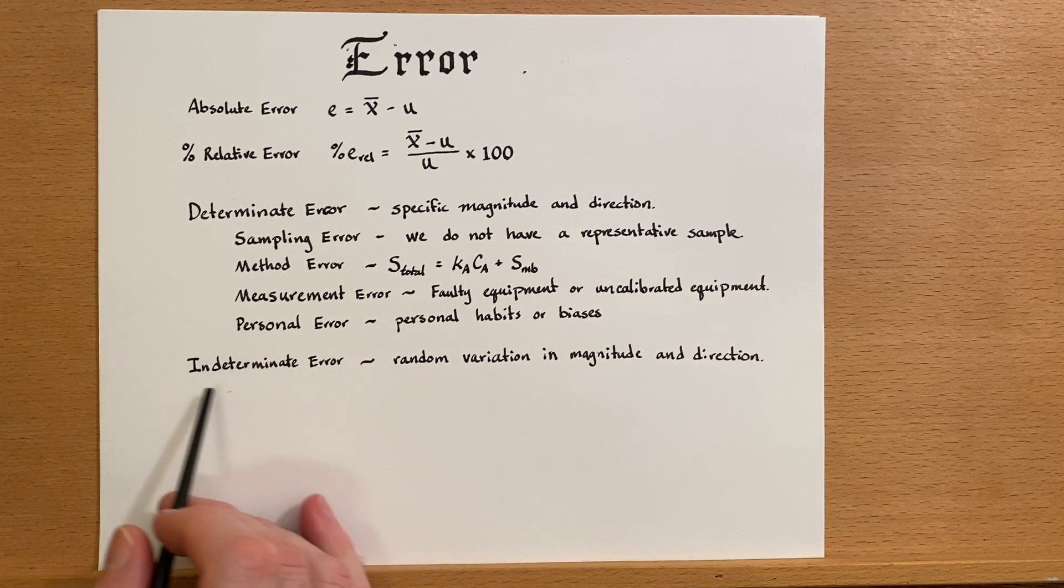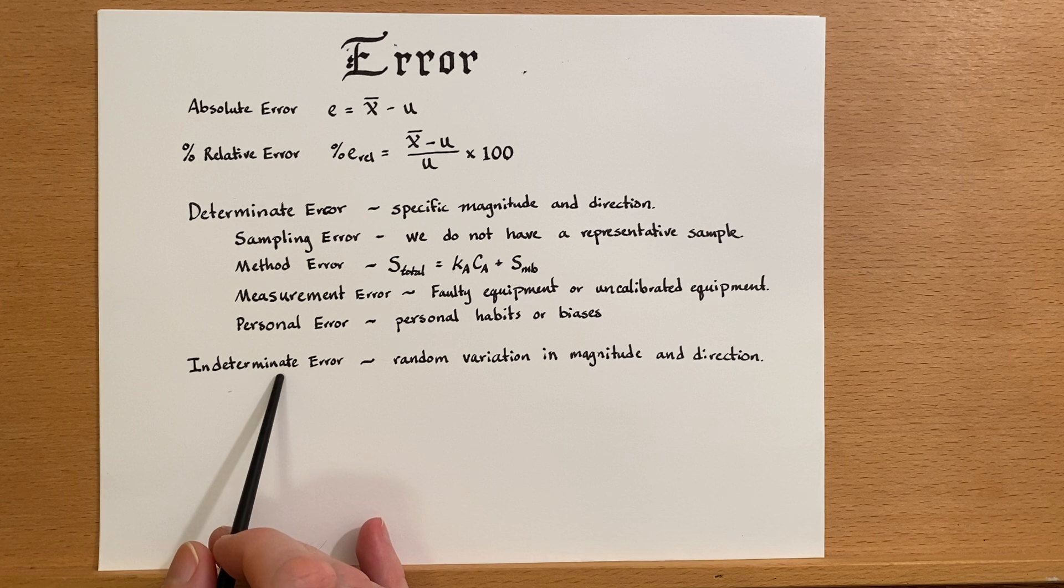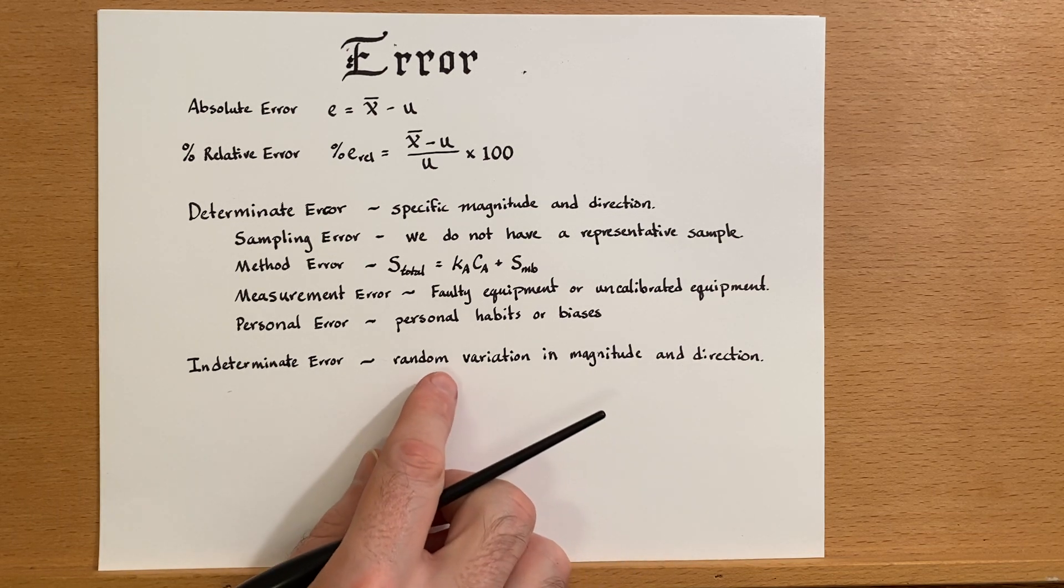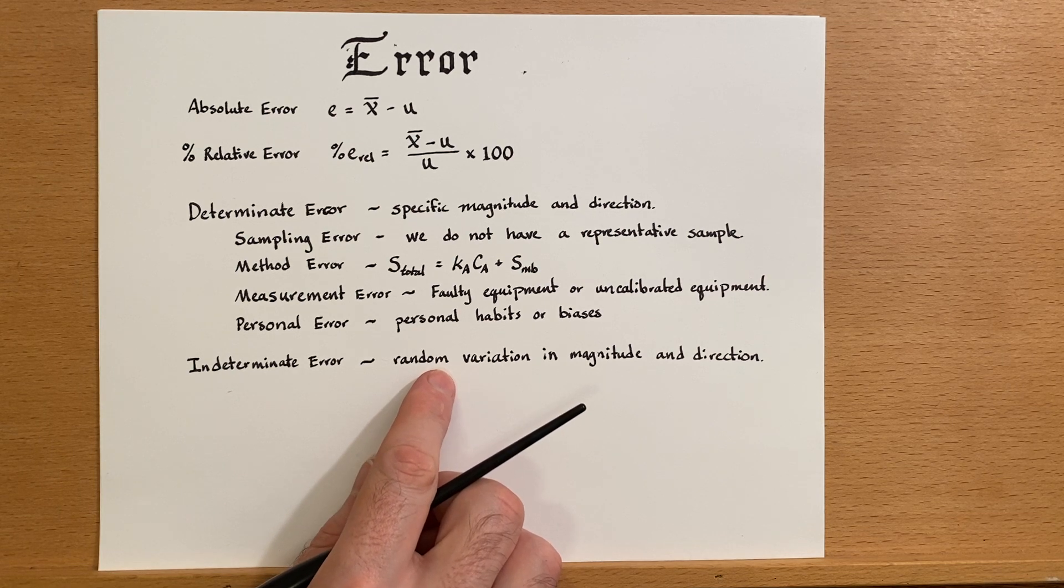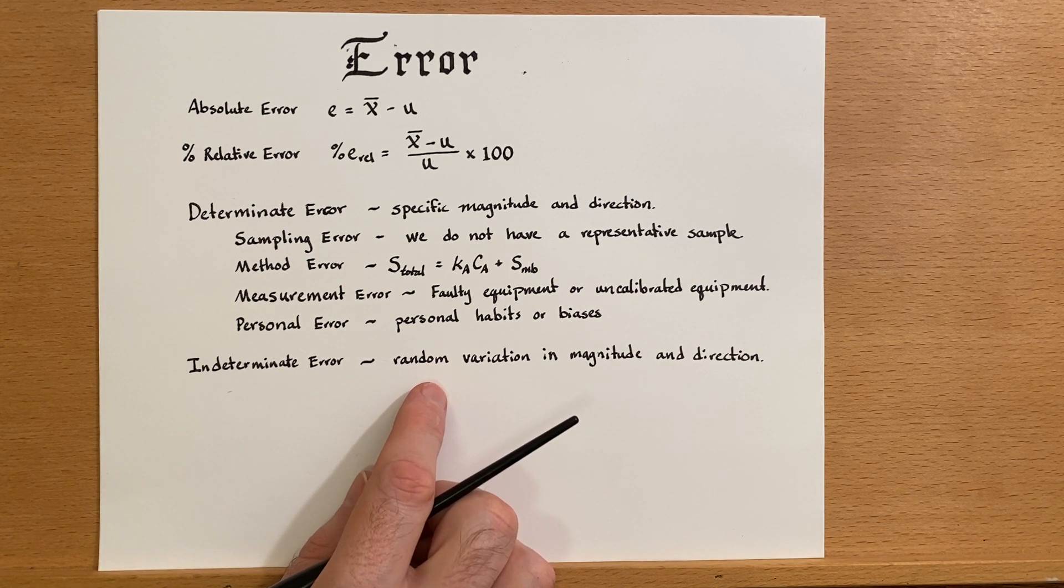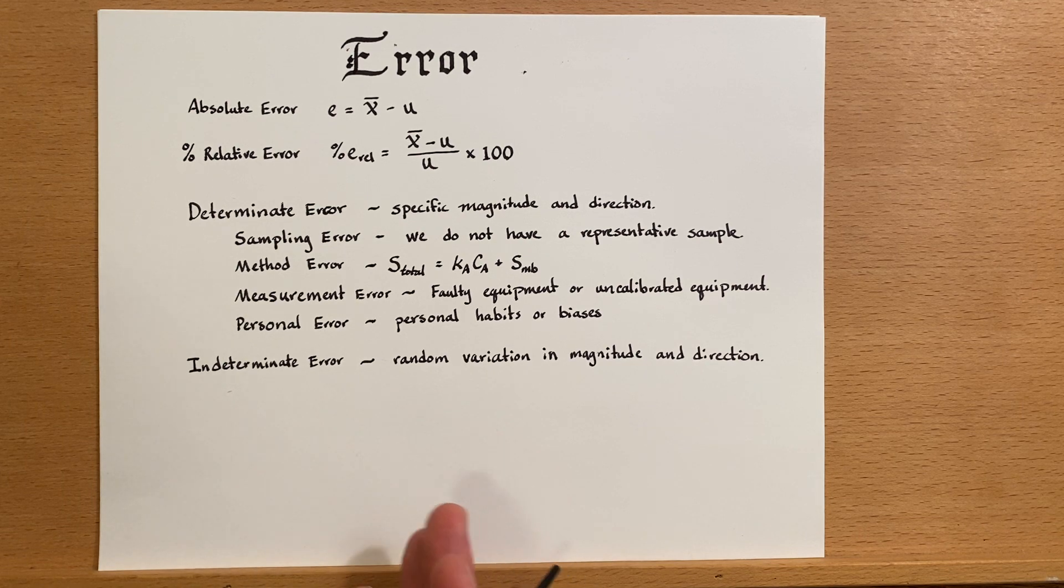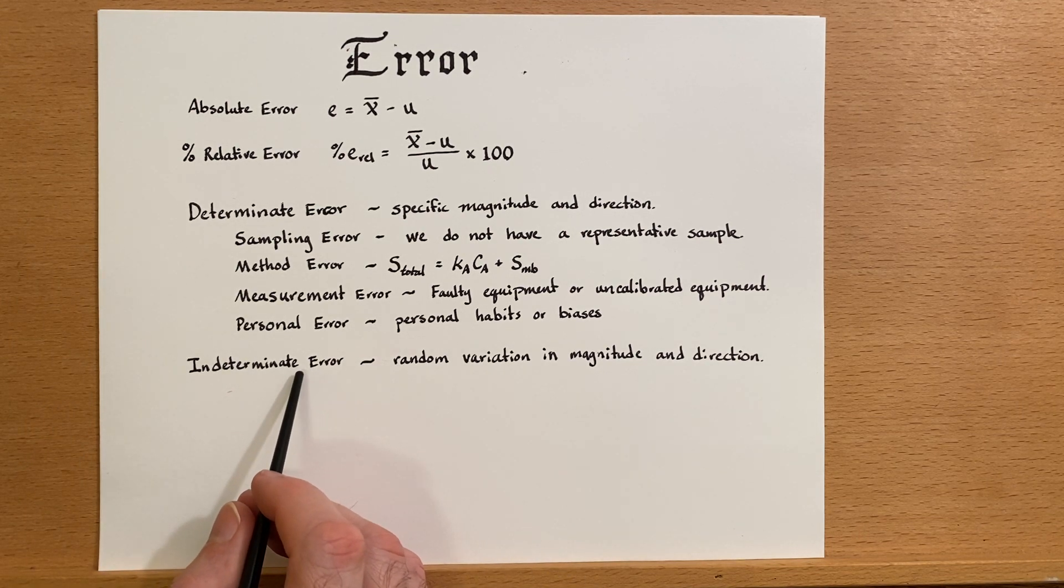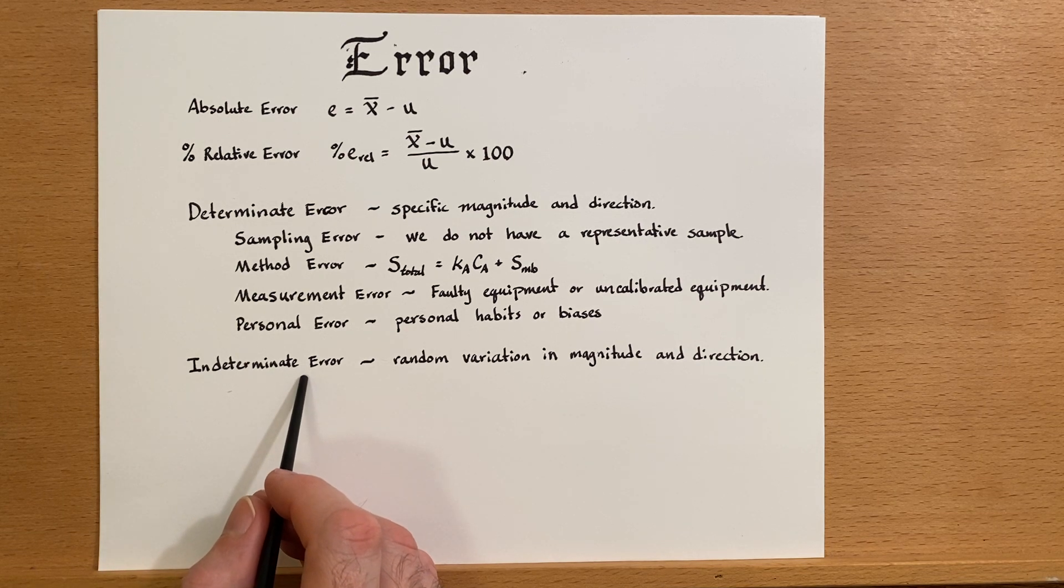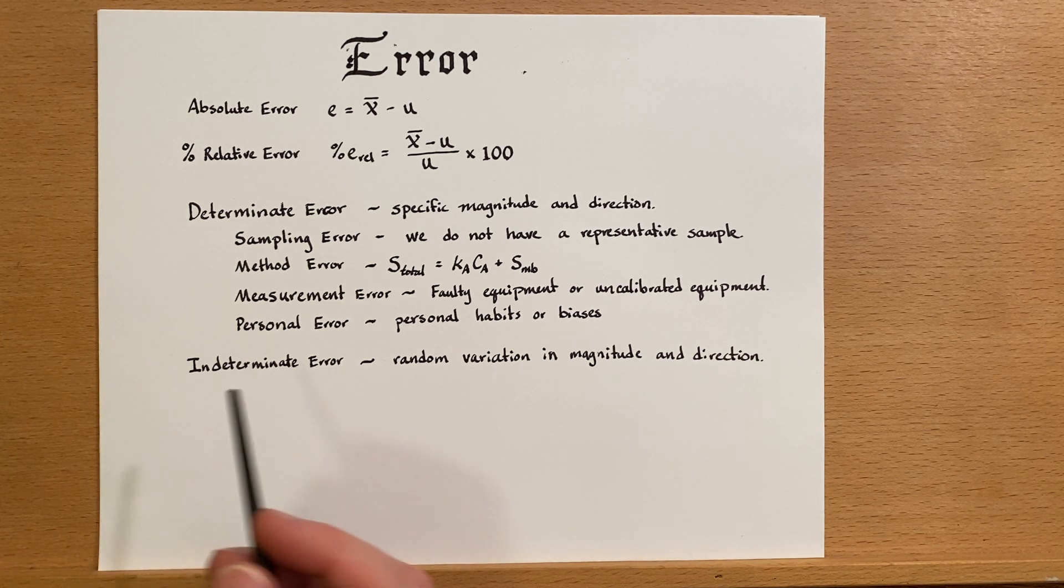It could be the result of one of these other types of determinant error, and for that matter it could also be an indeterminate error. Let's briefly touch on that. Indeterminate error is different because it is a random variation in both magnitude and direction. This is an irreproducible error. Sometimes it's a little bit high, sometimes it's a little bit low, and the amount that it varies is not consistent. It may be 5% high at one point and it may be 2% low at another. This is much harder to detect and it is also much harder to deal with. In fact, you will never get rid of all of the indeterminate error.